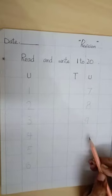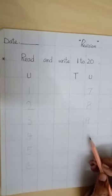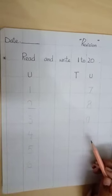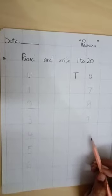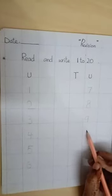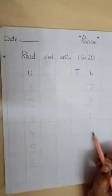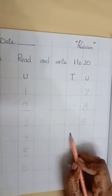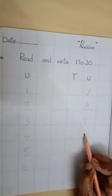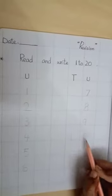In counting we have 9 units. After 9 we have tens. 1, 1, 0, 10.